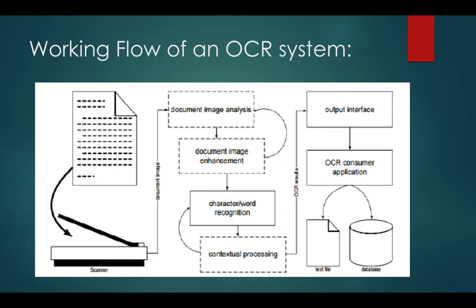This is what a workflow of an OCR system looks like. First, we have the scanner where we input a text or handwritten document. The image is extracted after scanning and initial document image analysis is performed. We also do preprocessing for document image enhancement, which can iterate until segmentation of the text in the image is done correctly — separating out blobs of text. Then we move on to character and word recognition.